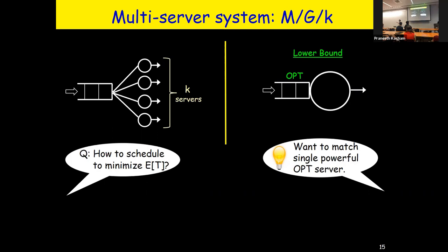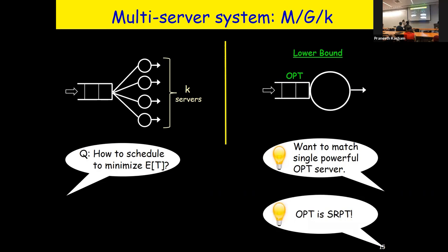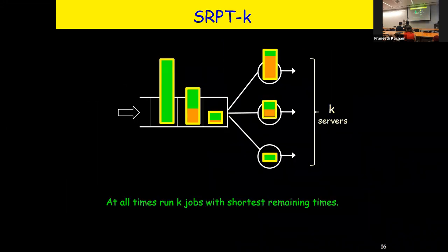The optimal scheduling for a single server is SRPT. So we're trying to make our multi-server system look like a single server with SRPT. The idea is to run SRPT-K: at every moment in time, choose to run the K jobs with the smallest remaining processing time. Just like at your desk, but now there are K of you and you're all doing the K smallest remaining time jobs.